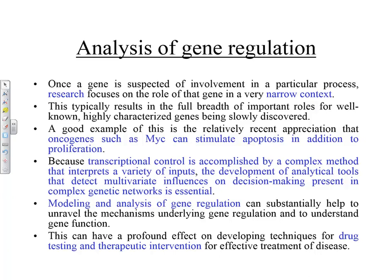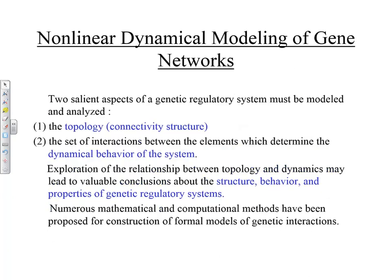Modeling and analysis of gene regulation — how genes and proteins regulate each other — can substantially help to unravel the mechanisms underlying gene regulation and understand gene function. In cancer, it is disruption of gene function. But if you look at prenatal development, a single fertilized egg developing into an individual has a lot of controls: one gene controlling the other, control not only in time but also in space — because your eyes have to appear at the right locations. This modeling can have a profound effect on drug testing and therapeutic intervention.